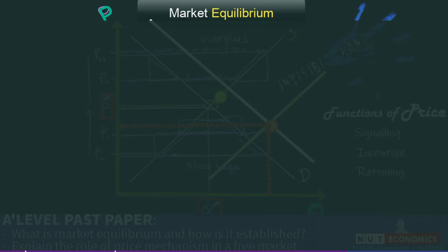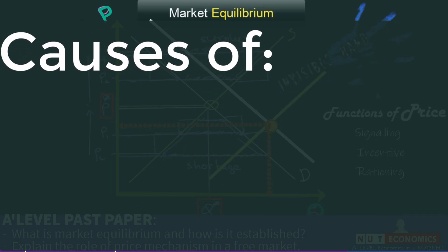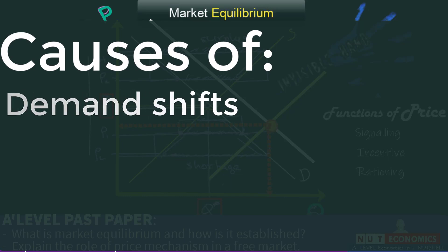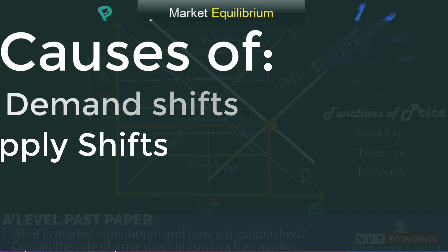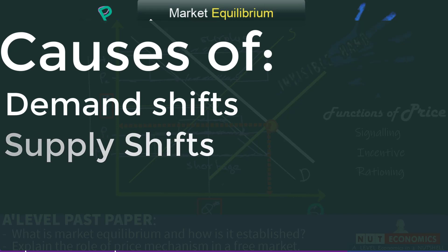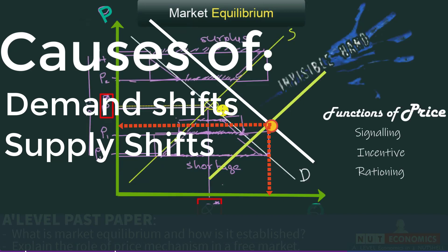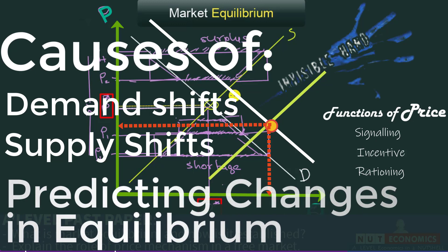Going forward, the next video will give a theoretical explanation of common non-price factors that affect demand, followed by common non-price factors that affect supply. Once we know what changes demand and supply, we will return to the graph to explain what happens to equilibrium price and quantity when demand increases or decreases, and the same for supply. The focus is on changes in market equilibrium when non-price factors change.